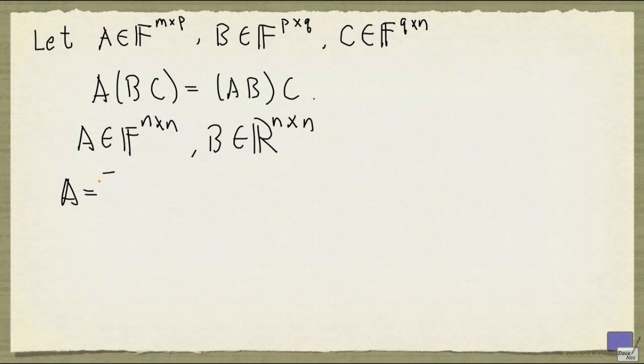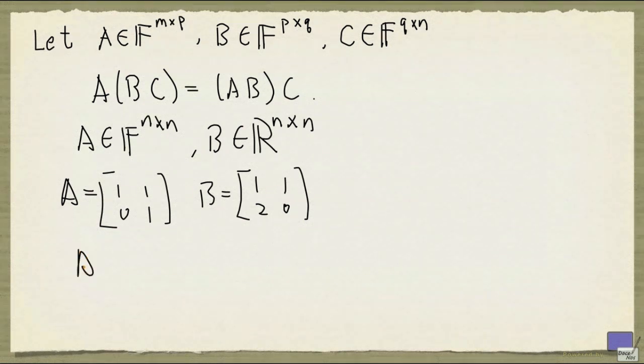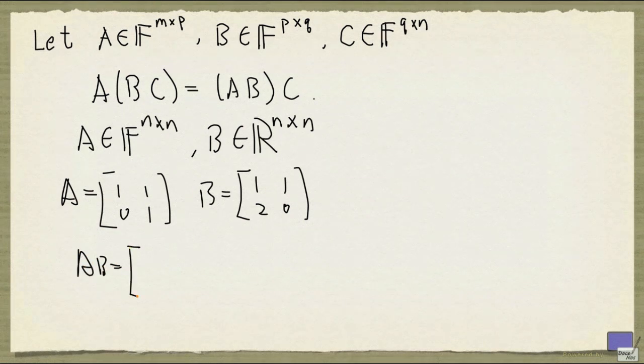For example, if I take A to be 1, 1, 0, 1, and B to be 1, 1, 2, 0, then A times B is the following, and B times A is this. So they are obviously not equal.